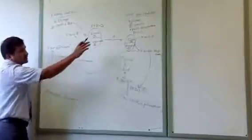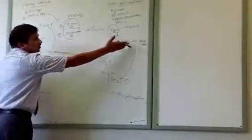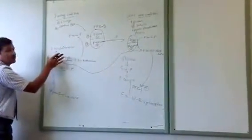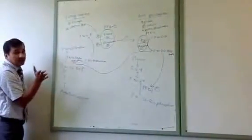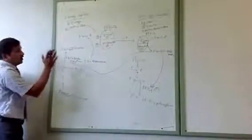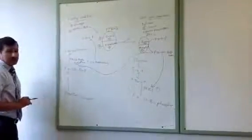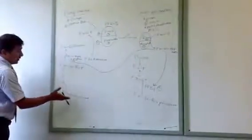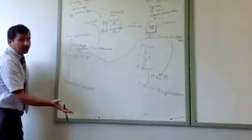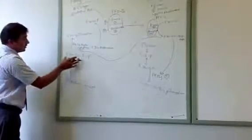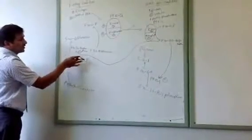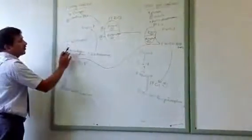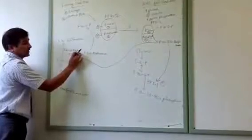So in well-fed condition, fructose 2,6 bisphosphate keeps glycolysis active and gluconeogenesis inactive. In fasting condition, we really need glucose, so gluconeogenic substrates like pyruvate or lactate must be taken back to fructose 1,6 bisphosphate and then to fructose 6 phosphate — but only if fructose 1,6 bisphosphatase is active.